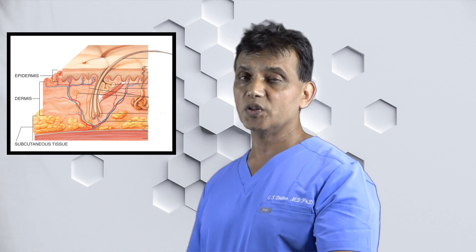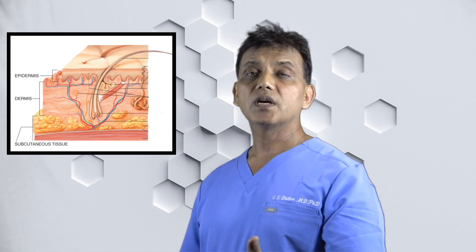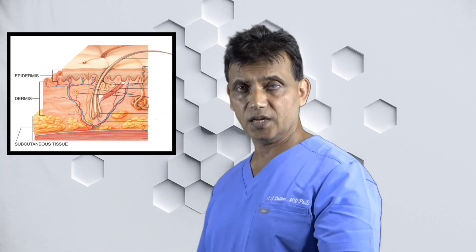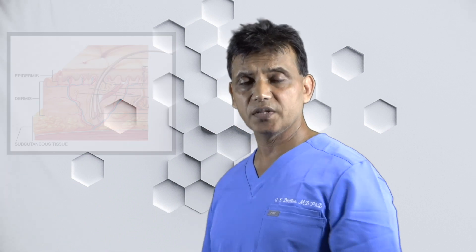Underneath the muscle is the bony skeleton. To recap the different layers: number 1, epidermis; number 2, dermis; number 3, subcutaneous layer; number 4, muscle overlying the bony skeleton.